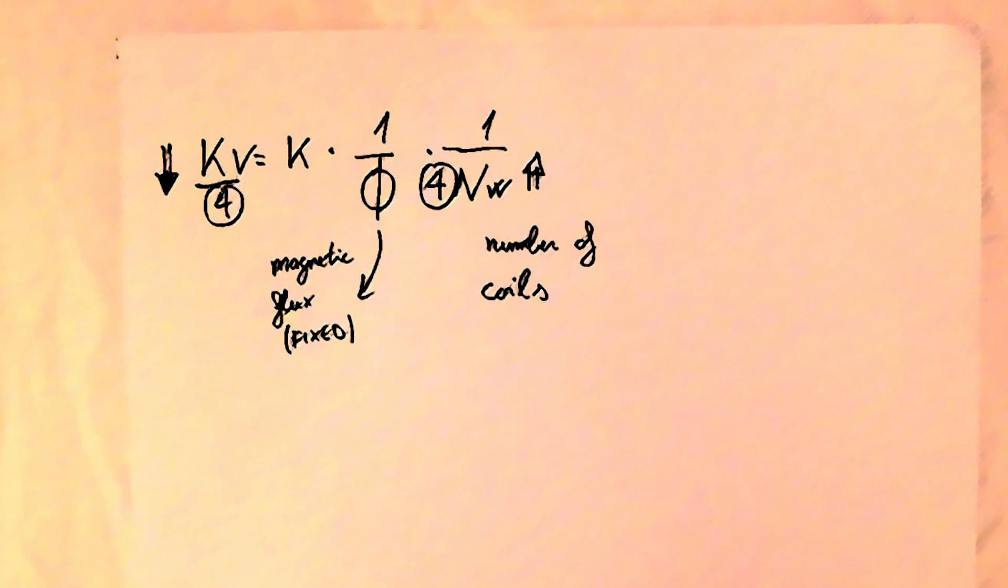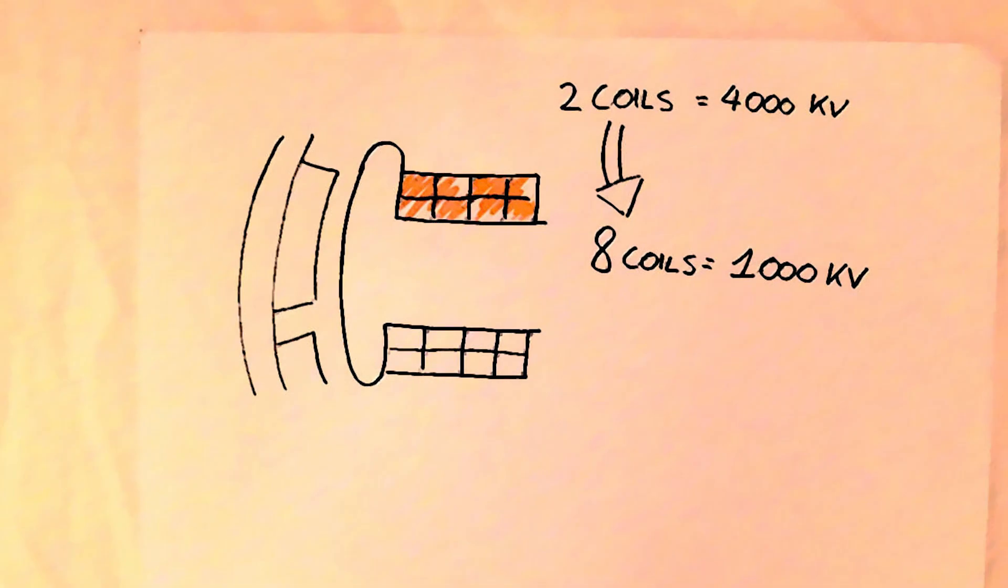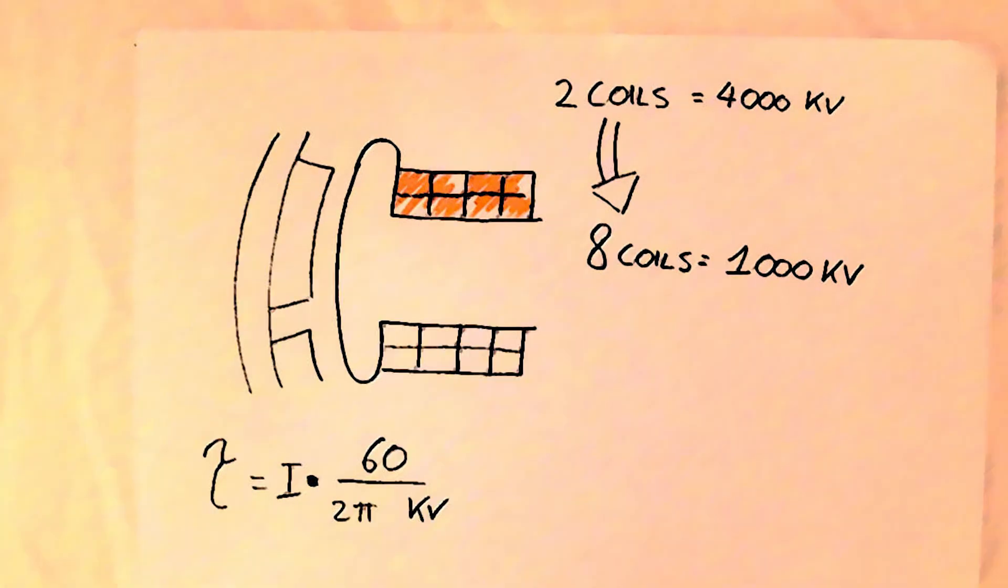That is to reduce the kV four times we need to fit four times more coils. So let's fit in there eight coils instead of two. That brings us to 1000 kV and let's see what happens to the torque.